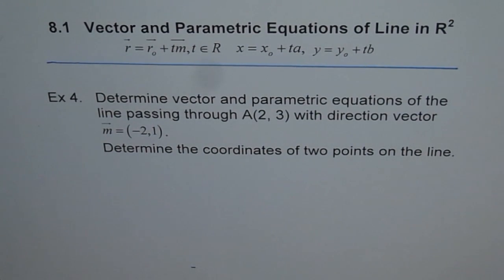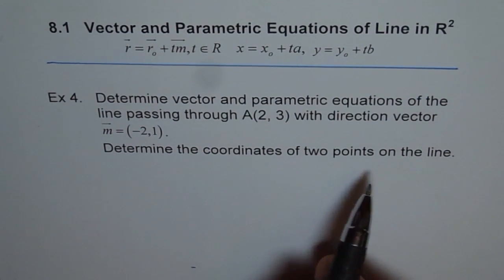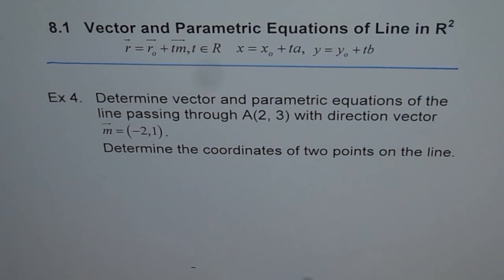Example 4: Vector and Parametric Equations of Line in R². Determine vector and parametric equations of the line passing through point A(2,3) with direction vector m=(-2,1). Part B is determine the coordinates of two points on this line, any two points.